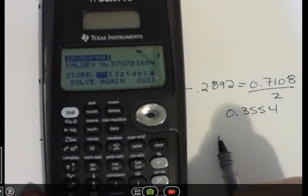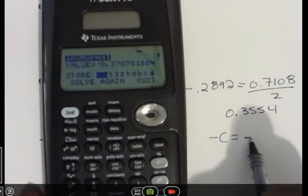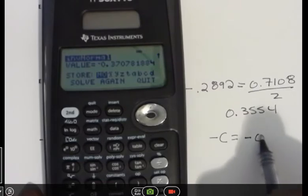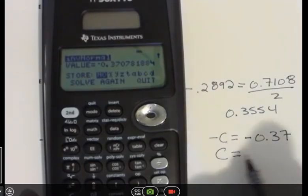And that gives me that negative C is negative 0.37. You should look at these values to two places. And that means that the positive C value here would be 0.37.